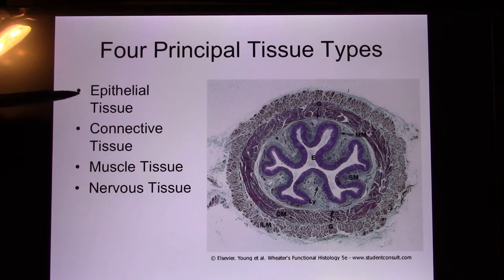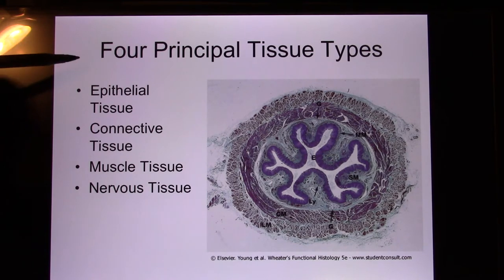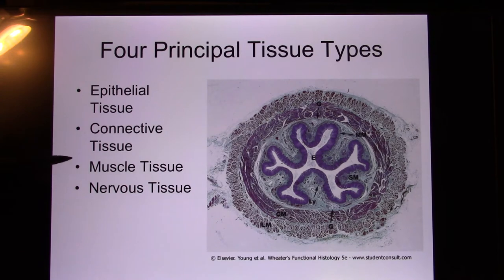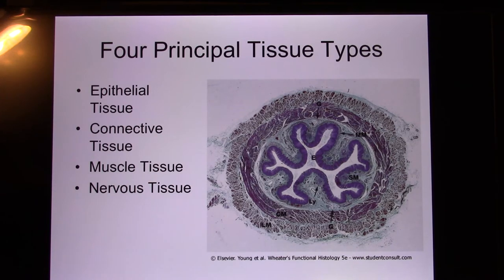The four kinds of tissues are: epithelial, like your skin; connective; muscle; and neural. Today we mainly focus on the first two in this unit. We will mainly focus on muscle in unit 3, and the nervous tissue in units 4 and 5.